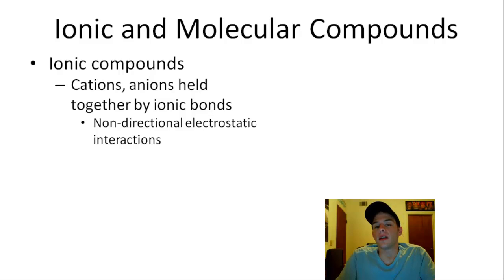So what the heck does that mean? Well, what I mean by that is that there's no specific cation that pairs with a specific anion. Instead, we have each cation surrounded by anions. And then each anion is also surrounded by cations. And the resulting structure is what we call a lattice.